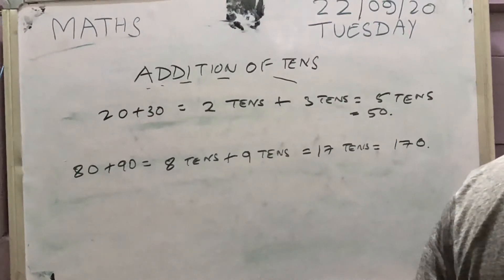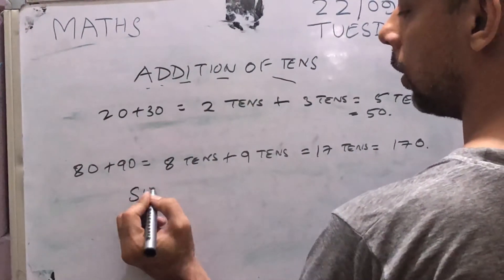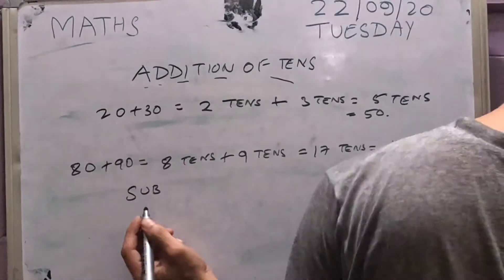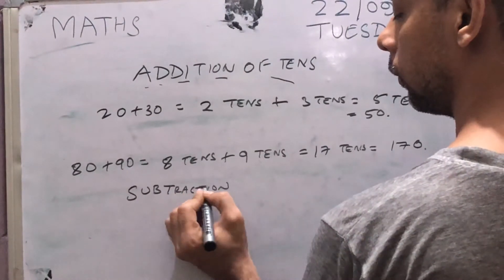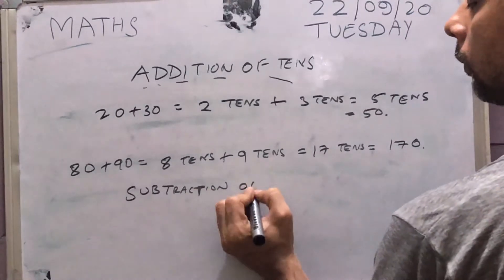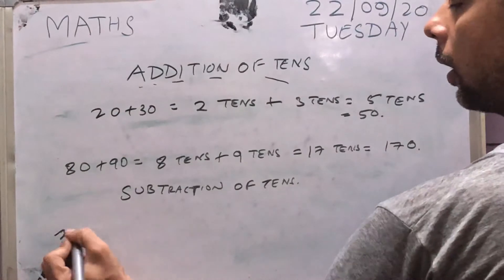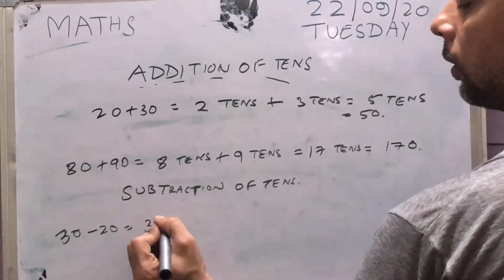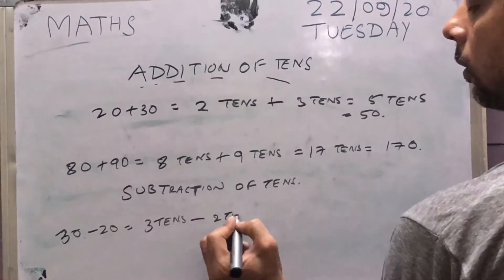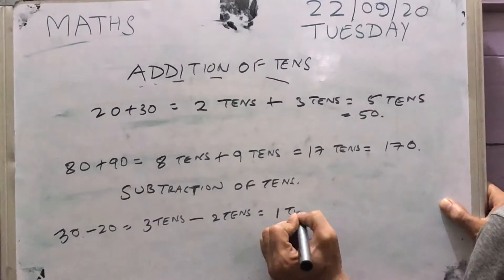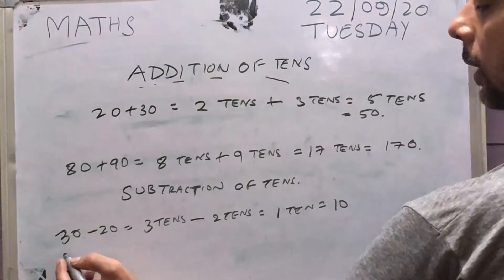You can do similar for subtraction by the way. So this is addition of tens. Now what you can do is subtraction of tens. For example, 30 minus 20. This is same as 3 tens minus 2 tens, which is 1 ten, because 3 minus 2 is 1, which is equal to 10.